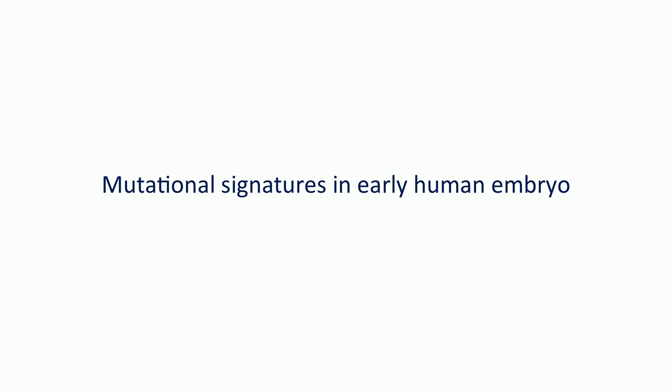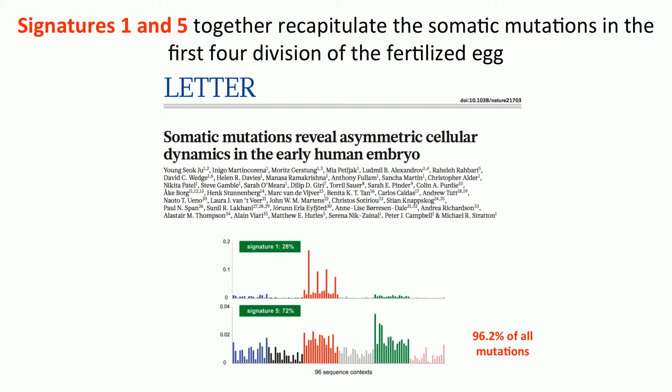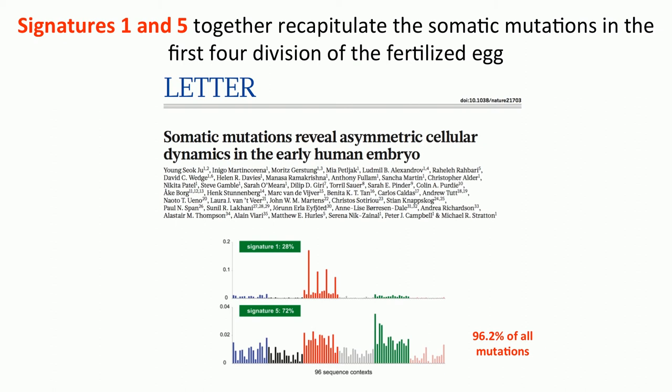We can also use existing data to look at the early human embryo. Using genome sequencing of normal blood from 241 adults, we can infer mutations that occurred in the first or second division of the fertilized egg. We see that 96.2% of those very first mutations are recapitulated by signatures 1 and 5. These are the most important somatic mosaic mutations — those occurring in the first, second, and third divisions of the fertilized egg will be found in many parts of the body.